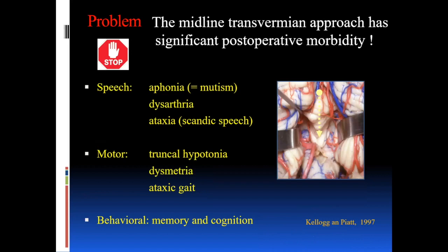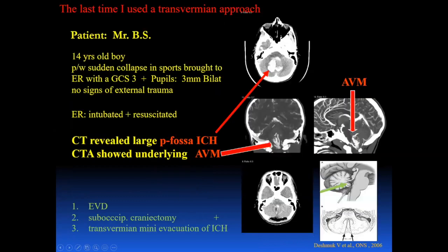The far-lateral approach also has significant post-operative morbidity because you really peel down the muscles along the side of the neck, leaving the patient in significantly more pain and contraction than with midline approaches. The midline transvermian approaches are also not ideal because many patients end up with speech trouble, aphonia, dysarthria, ataxia, truncal hypotonia, and even memory and cognition problems from violation of the fiber tracts to the dentate. Don't just go through the midline — think about how to do this best.